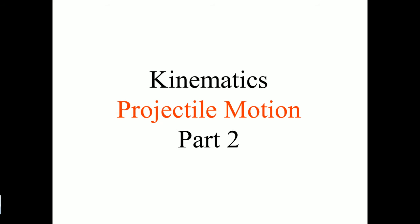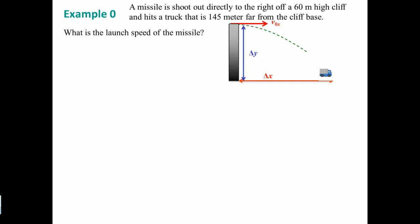Welcome, this is an AP Physics lecture on kinematics — projectile motion part two. Here we're going to do some calculations. The starting example: a missile is shot directly to the right off a six-meter high cliff and hits a truck that is 145 meters from the base of the cliff. What is the launch speed of the missile? Try this by yourself by pausing the video.